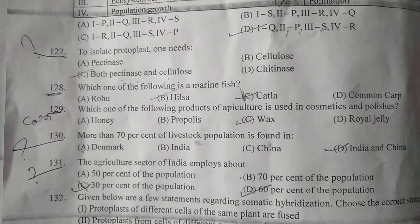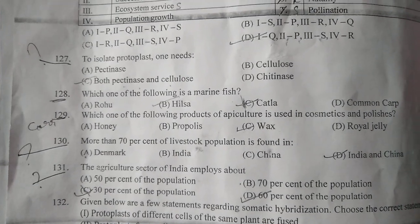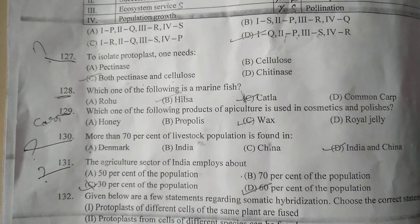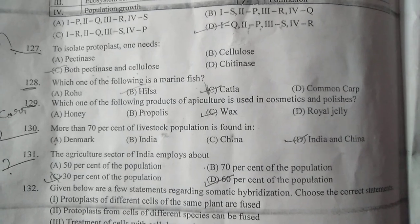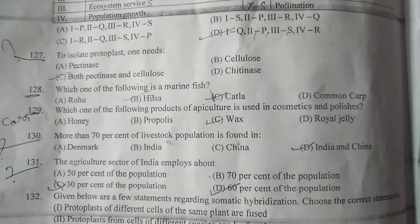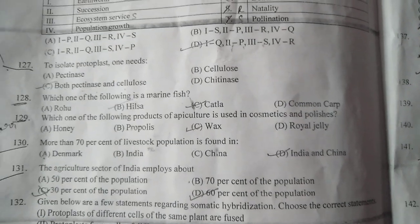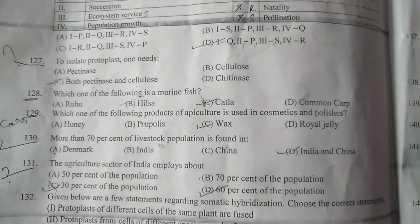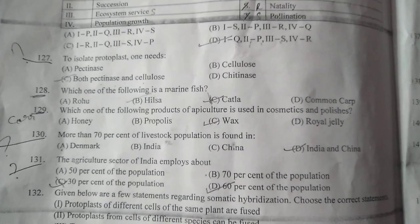Question number 128: Which one of the following is a marine fish? The answer is Hilsa. Question number 129: Which one of the following products of apiculture is used in cosmetics and polishes? Your answer is wax.